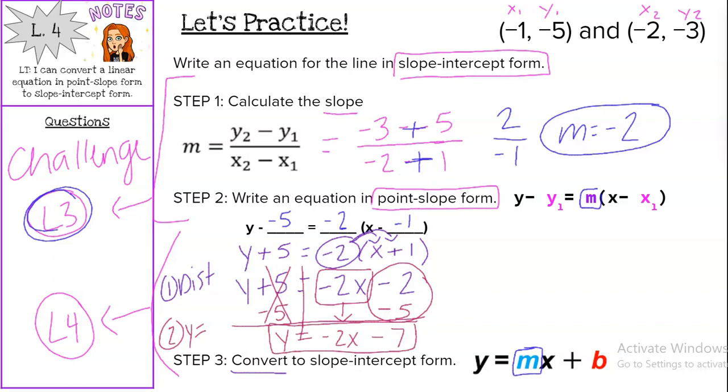So our slope-intercept form is y equals negative 2x minus 7. Double check that m. Is it the right number? Yes, it is.